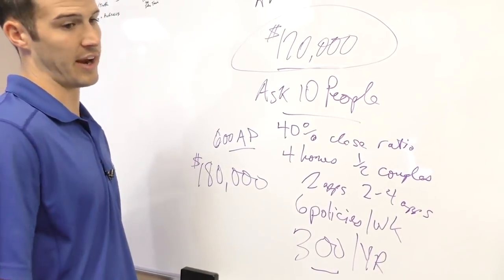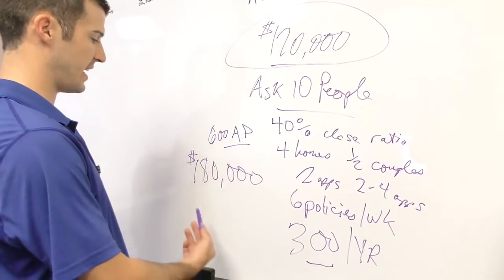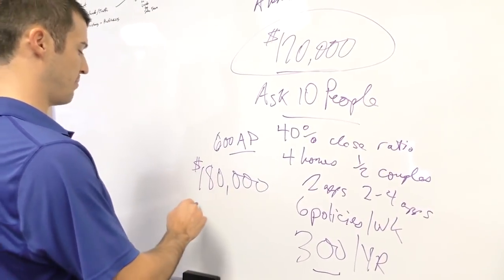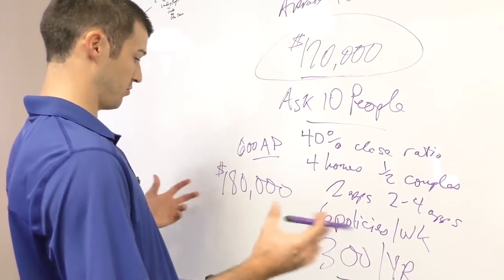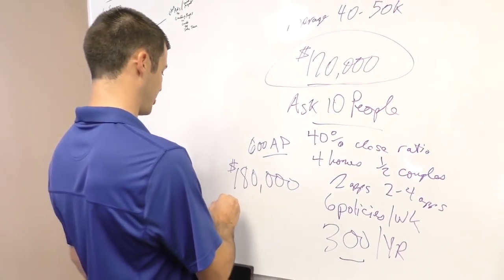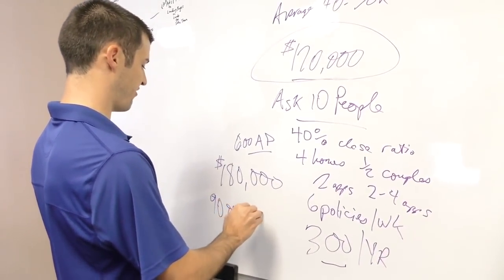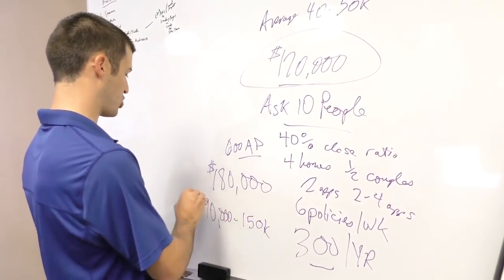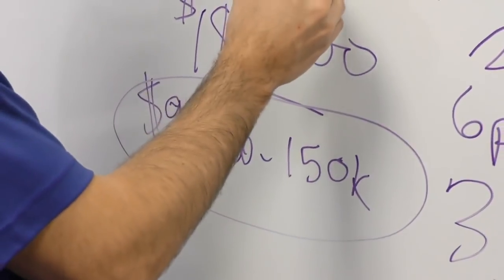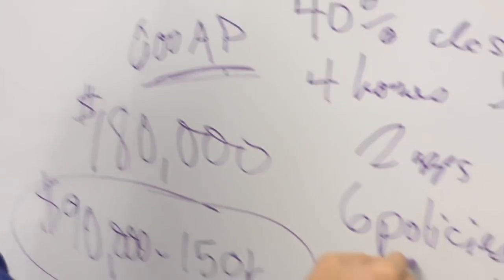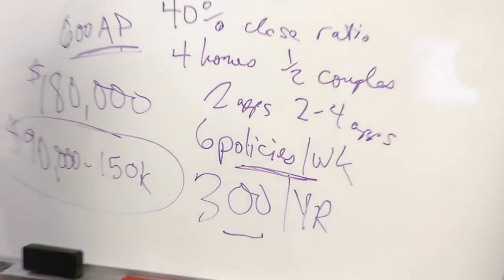Let's say your commission is not a hundred percent or you get a nine-month advance. Depending on commission level and advance period, you're probably looking at bringing home about 90 to a hundred and fifty K of actual real money. This is probably low, this is probably about right, maybe low depending on how good you are at making double sales in homes.